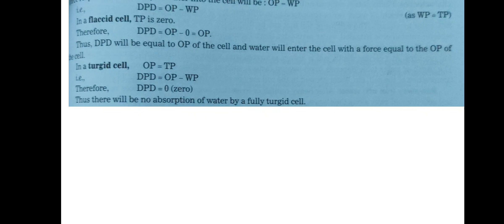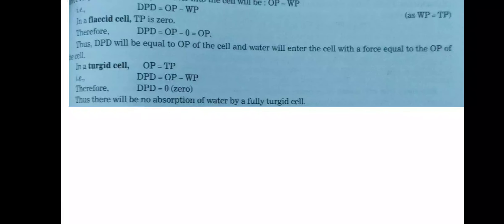In a turgid cell, osmotic pressure is equivalent to turgor pressure, so DPD equals osmotic pressure minus wall pressure. The cell wall prevents the cell from bursting — water molecules only enter if there is space after turgor pressure. Zero DPD indicates no absorption of water occurs in a fully turgid cell. All these terminologies — matric potential, pressure potential, water potential, diffusion pressure deficit — are in coordination to make the concept of water movement much clearer.